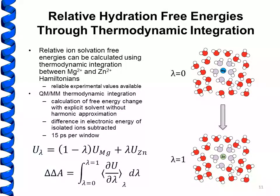The advantage of calculating free energies in this manner is that we avoid any implicit solvation or harmonic approximation, computing relative free energies based on thermal averages. The experimental relative hydration free energies are well known so we can compare fairly directly to experiment. To perform these simulations we carried out equilibration for 11 different windows with lambda values ranging between 0 and 1, and sampled 15 picoseconds of QM/MM molecular dynamics for each window. We also calculate the absolute electronic energy of the two gas-phase ions and subtract the difference in electronic energy from our free energy to get the relative hydration free energy.